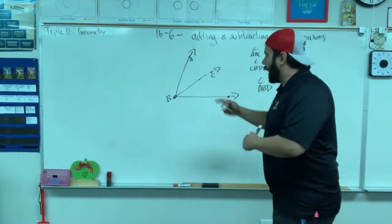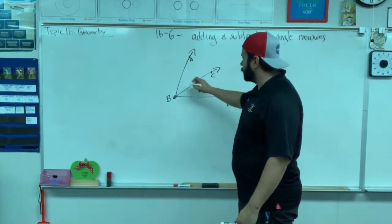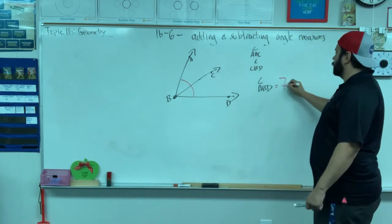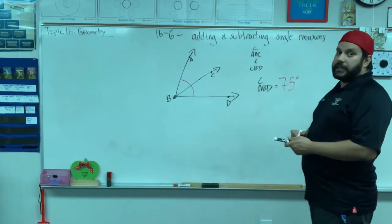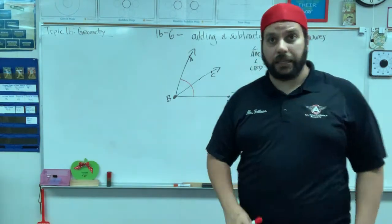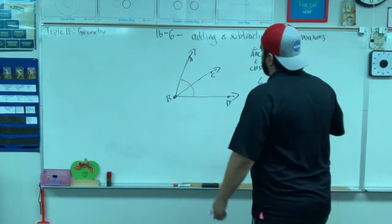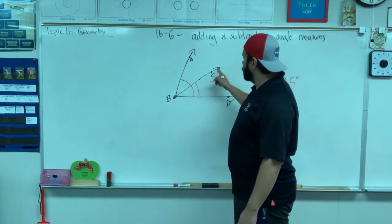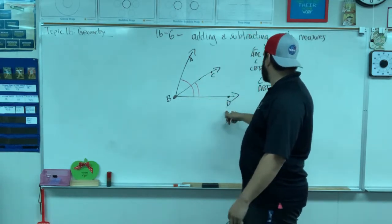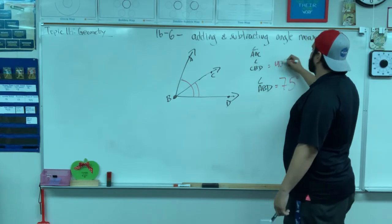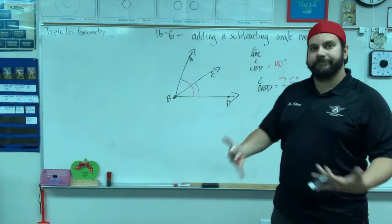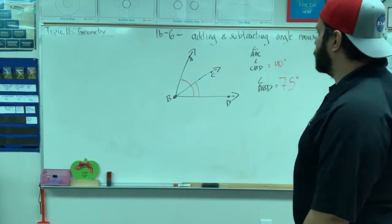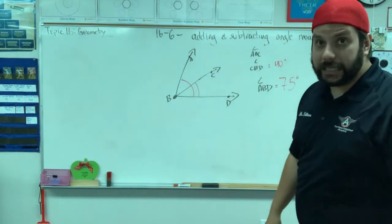I'm going to tell you that angle ABD equals 75 degrees. That is the angle measurement of ABD. And the angle measurement of CBD is 40 degrees, and I'm trying to figure out what the angle measurement of ABC is.